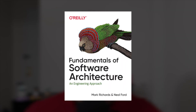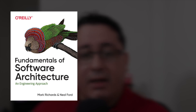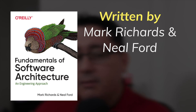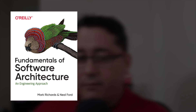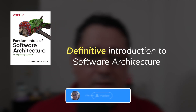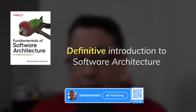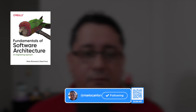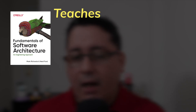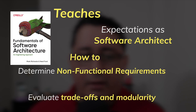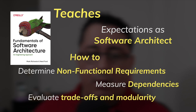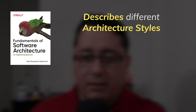Let's start with the fundamentals, and by that I mean Fundamentals of Software Architecture: An Engineering Approach, a book written by Mark Richards and Neil Ford. I think this book is the definitive introduction to software architecture. It's a bit high level, but it covers everything from expectations as a software architect, how to think as one, how to evaluate trade-offs and modularity, how to determine non-functional requirements, how to measure dependencies.